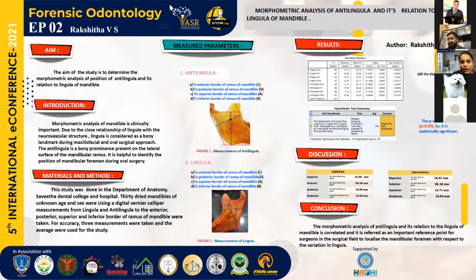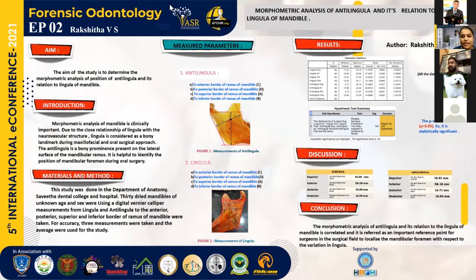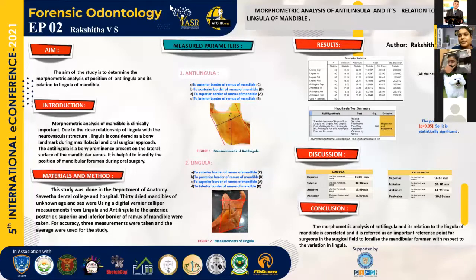For the linguella, I calculated from the linguella to the anterior border of the ramus of mandible, to the posterior border, to the superior border, and to the inferior border of the ramus of mandible. For accuracy, three measurements were taken and the averages were calculated. All measurements were tabulated, calculated, and analyzed by SPSS software version 23, and the results were calculated by Friedman's two-way analysis of variance by rank.